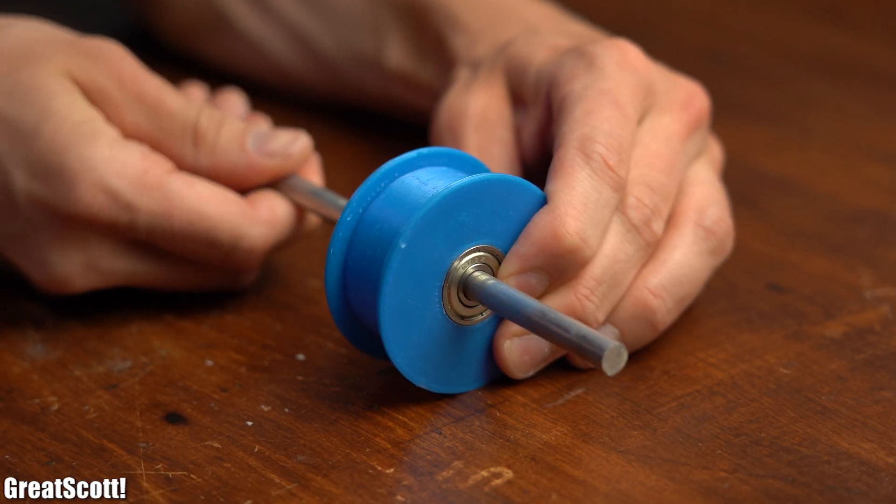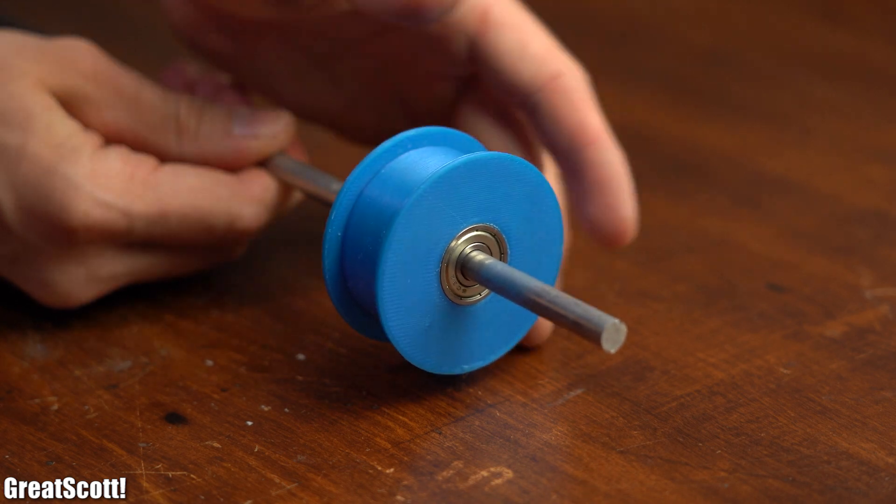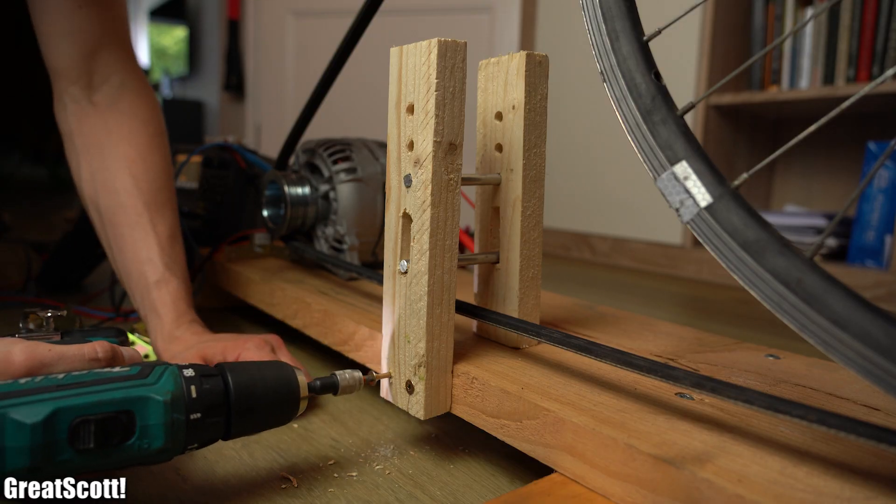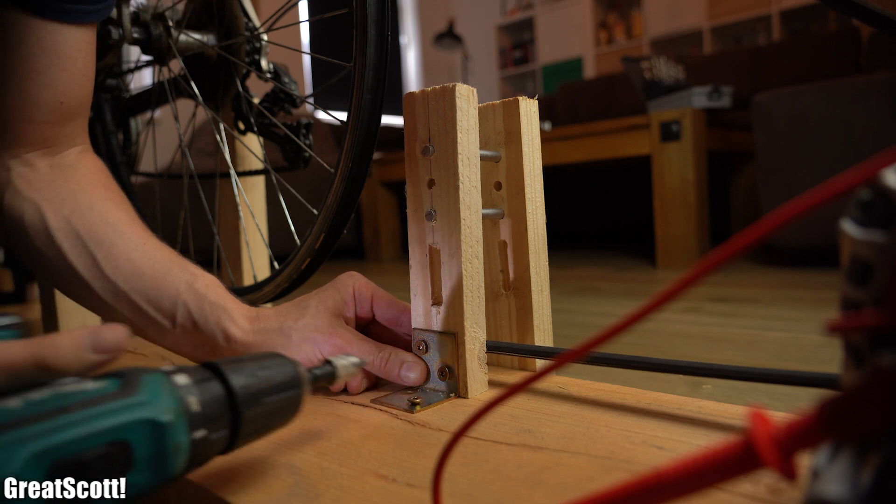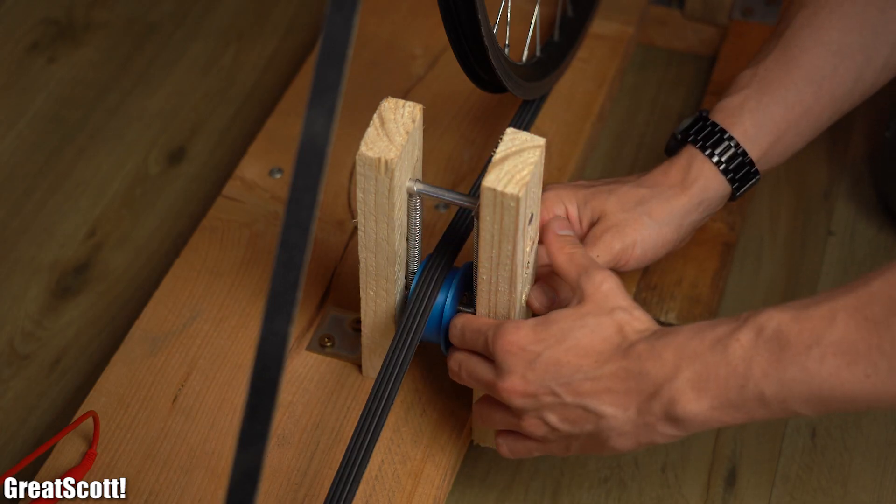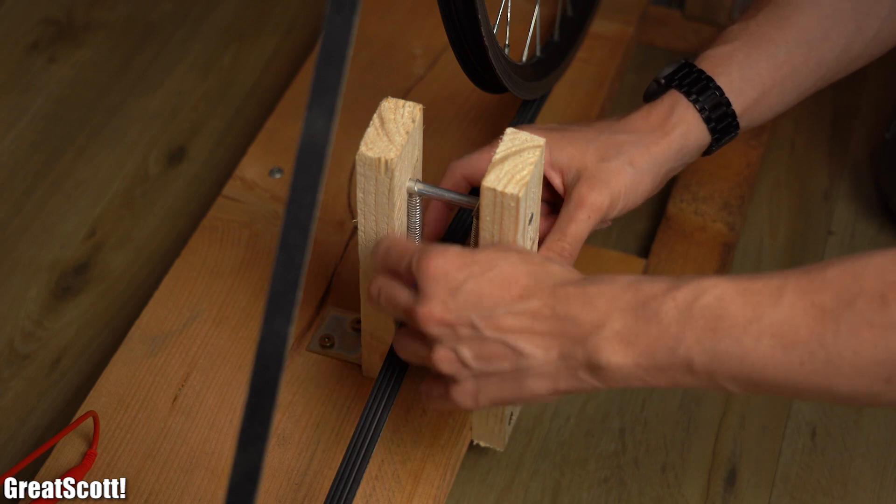As soon as that was done I hammered the two mandatory ball bearings into it and checked whether the rods would fit, which it of course did. So I mounted the wood laths left and right next to the belt with the help of screws and metal brackets and then secured the roller rods and springs into place.